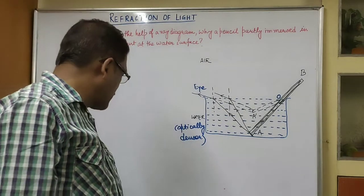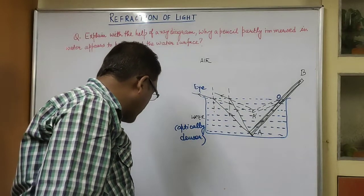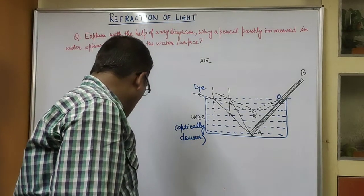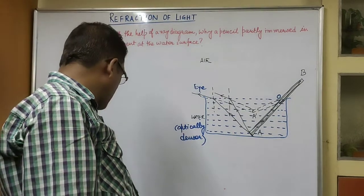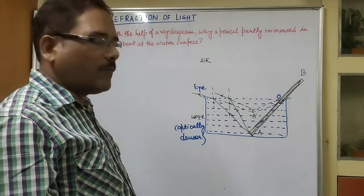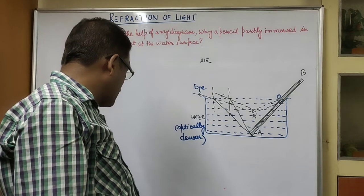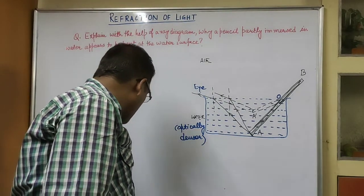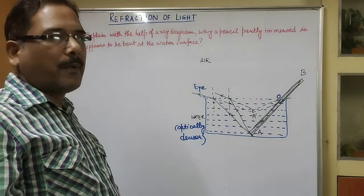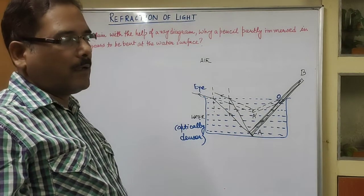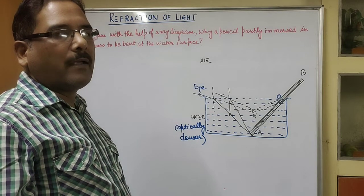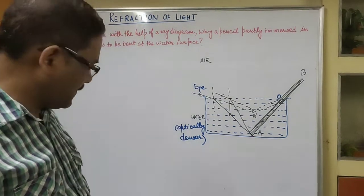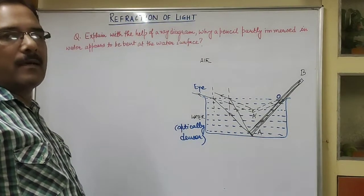The light reaching our eye from the portion of the stick inside the water appears to come from a different direction compared to the part of the stick above water. This is why the stick appears bent or displaced at the water surface. I think this is clear to you.